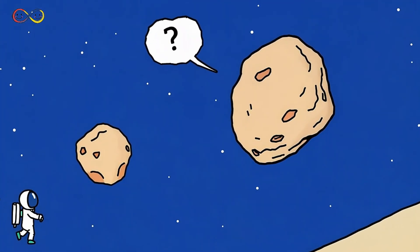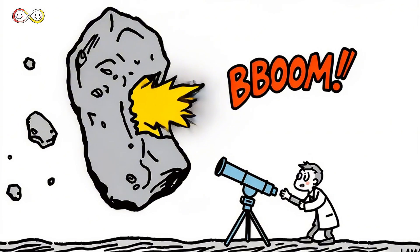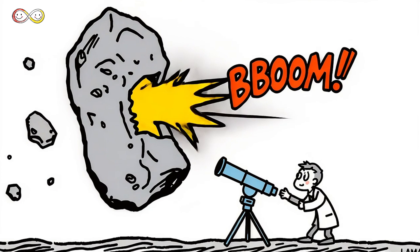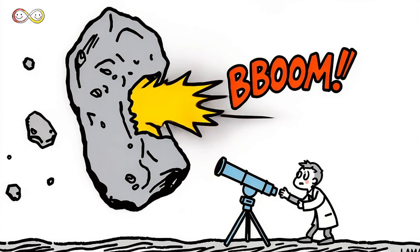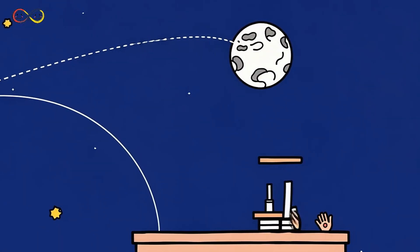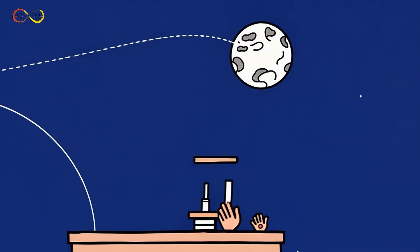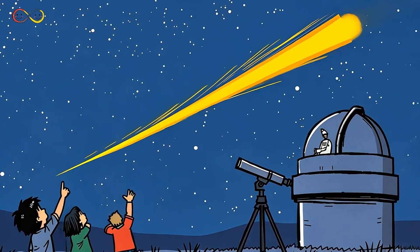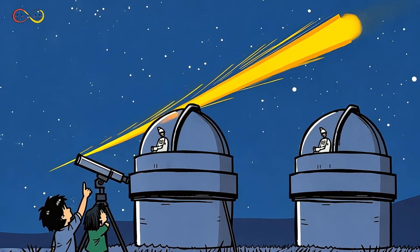Space is vast, but asteroids don't just float peacefully forever. Sometimes, they crash into each other. When two asteroids collide, they can break into smaller pieces. Some pieces stay in the asteroid belt, while others might travel through space. Over millions of years, these asteroid collisions have shaped the solar system. Some pieces may even fall toward planets, including Earth. Luckily, most asteroid fragments burn up in Earth's atmosphere, creating beautiful shooting stars.